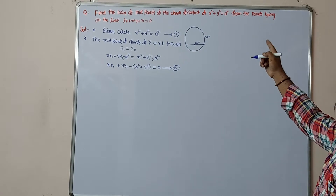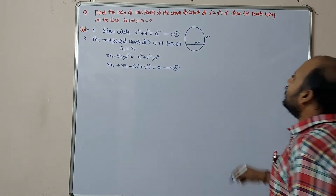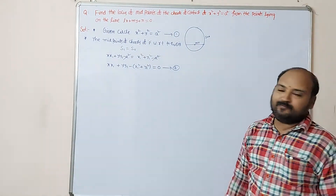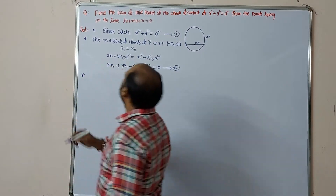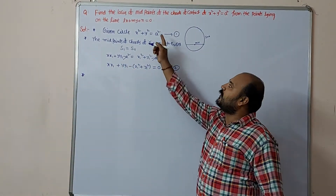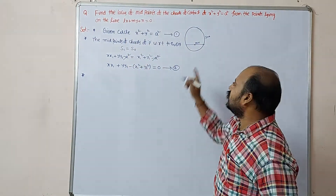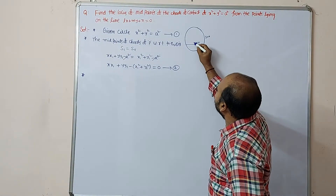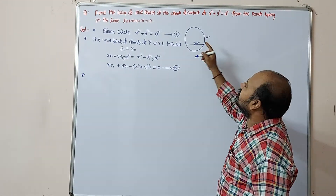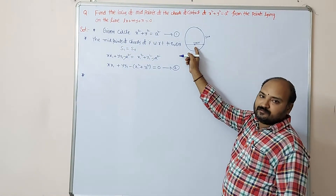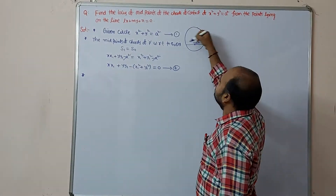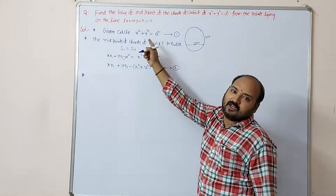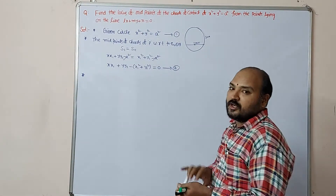Next, for the locus of midpoints of chords of contact from points lying on the line — this point is indirectly a pole for the required locus. The pole of the line with respect to the circle lies on the given line. Imagine the figure: the midpoint we've taken is the pole, so the required locus may be a circle like this.